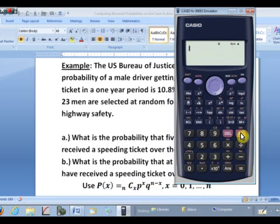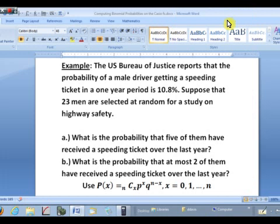Now contrast that with part B here, where it says we want to find the probability that at most 2 of the 23 have received a speeding ticket over the last year. So there we want to compute not just P of 2, but at most 2 means it could be, X could be 1, or X could be 0, where no one got a speeding ticket. So we want to compute the sum of three probabilities here. And so we'd want to compute a probability distribution, a table of probabilities for this. So let's do that now.